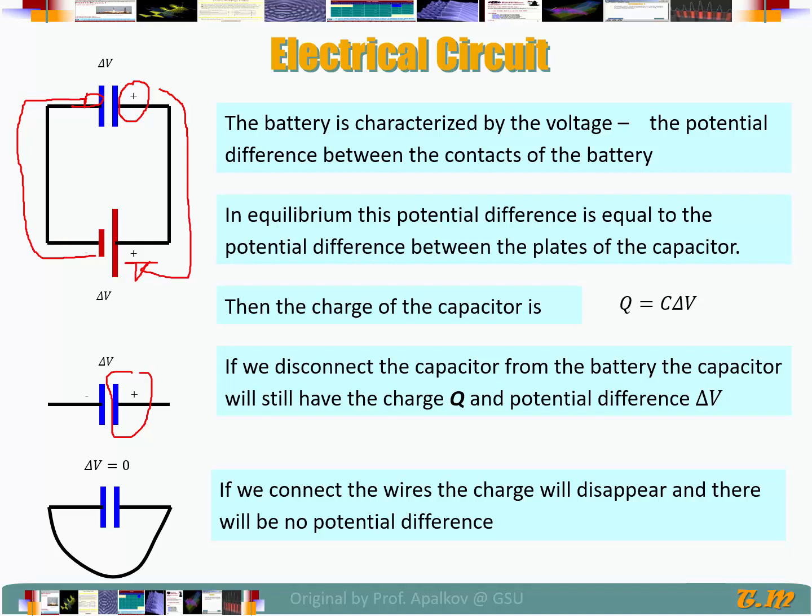Now, if we take a wire and connect the ends, these charges are going to combine, and our overall charge is going to become zero, and the potential difference is going to become zero.